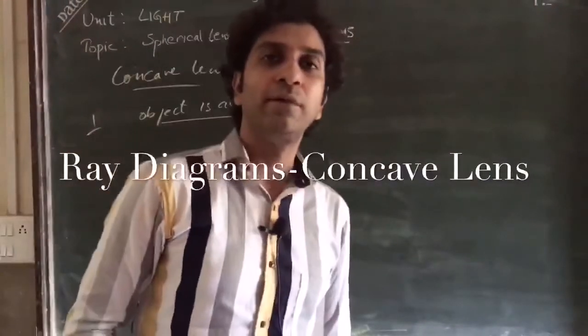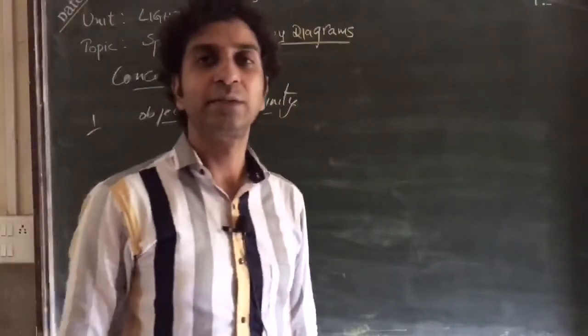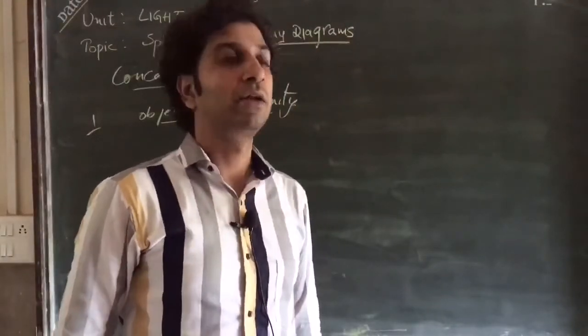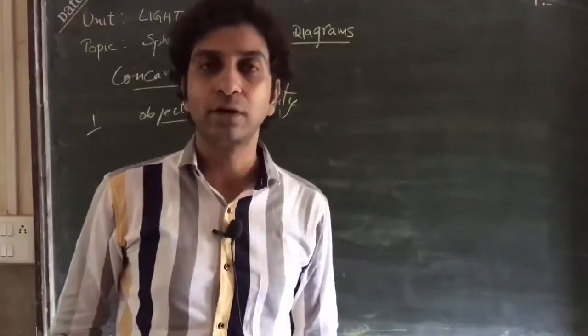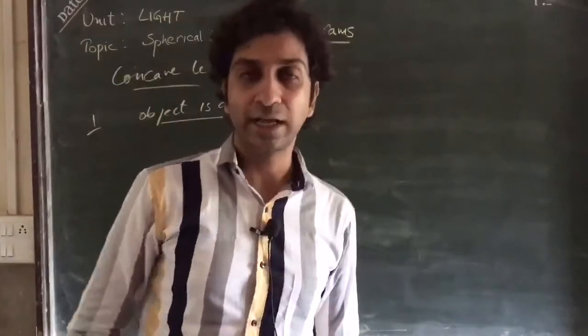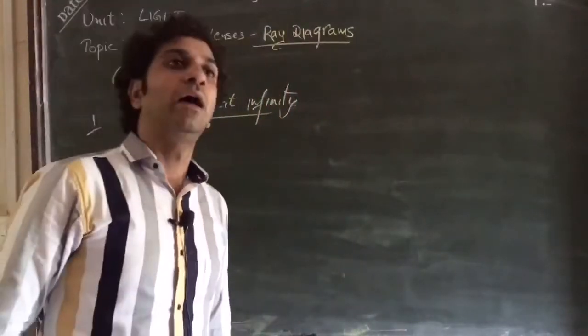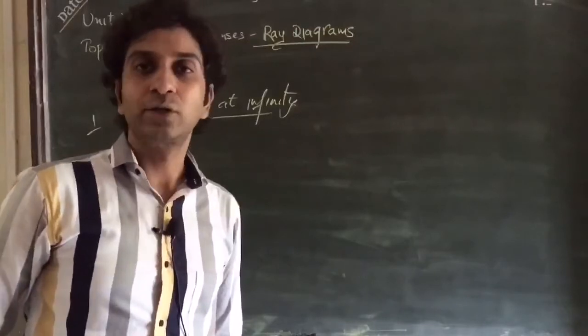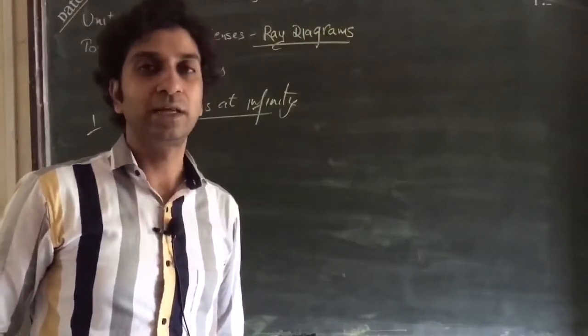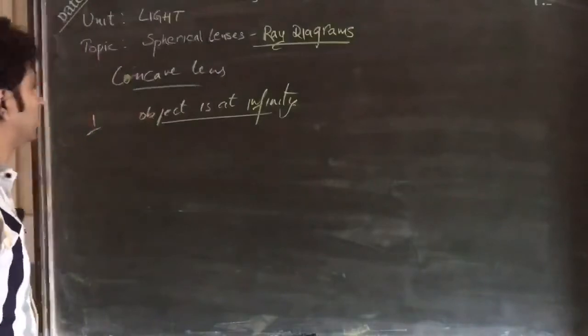Hello dear students, in my last lecture I have drawn the ray diagrams for convex lens. Now let's draw the ray diagrams for concave lens. These ray diagrams will show that the image formed will only be virtual and erect. Being a diverging lens, no real image will be formed.